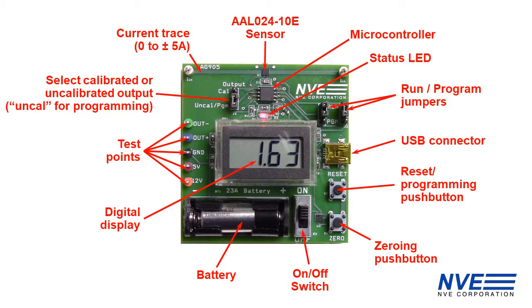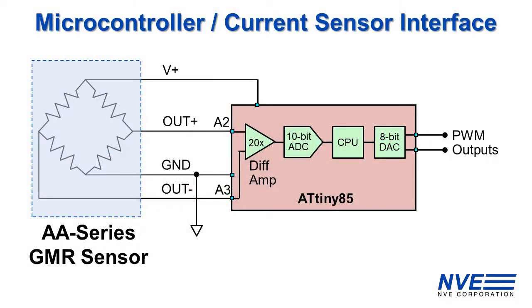Many micros will work, but with its 20x preamplifier, this inexpensive 8-pin ATtiny is especially well suited for GMR sensors.